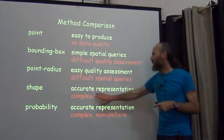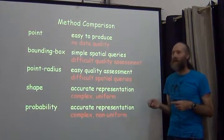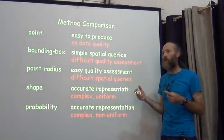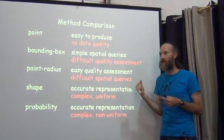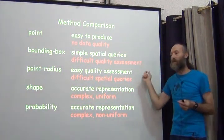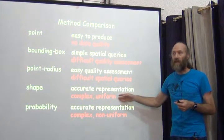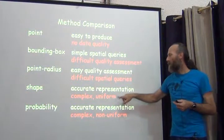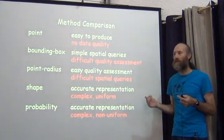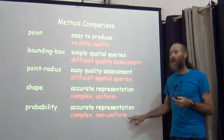With the shape method, the best thing is that it's an accurate representation of the place — it only contains the parts that describe the place and nothing else. A circle or point-radius can include the whole place but will include more than just the place. An extreme example is a river — a circle to describe a river includes all the area to the sides that aren't river. Shapes are complex and require GIS. Also, probability is uniform inside the shape. The probability method, by contrast, also provides an accurate representation but is complex and has a non-uniform probability.